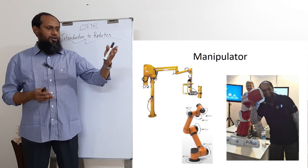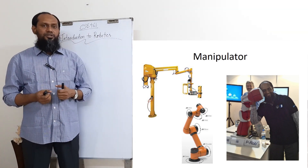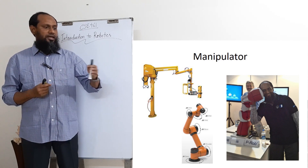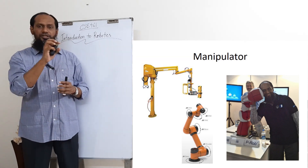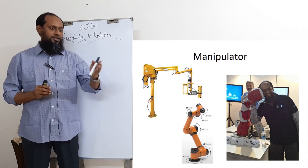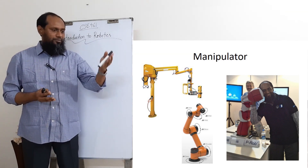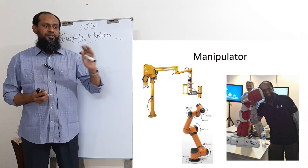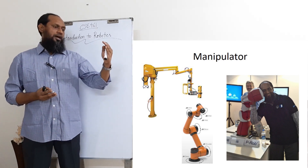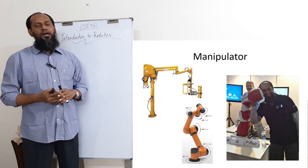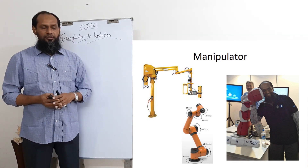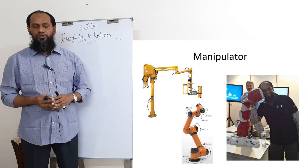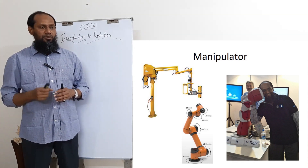Here are some examples of manipulators. One is used for fixing heavy equipment on a car or in heavy industry. The next one shows a six-degree-of-freedom arm with no end effector, and the person behind it is the builder of that manipulator. So when we say robotic arm, we mean a manipulator.